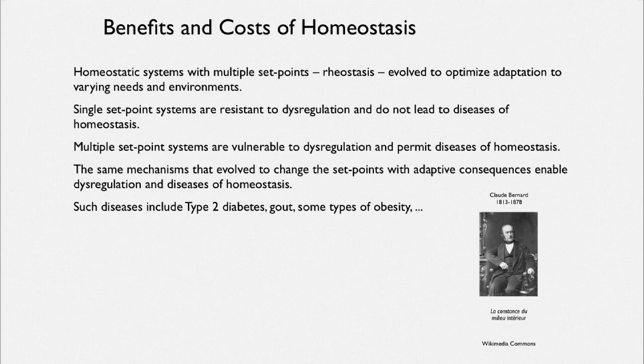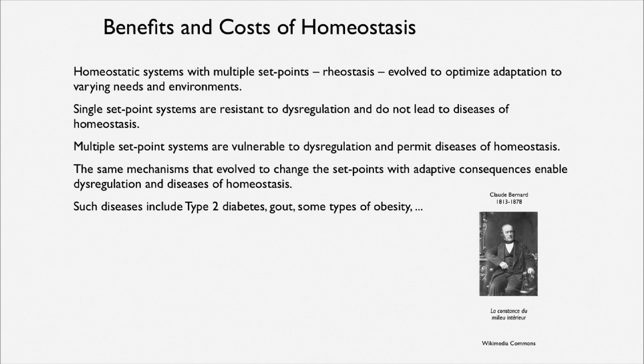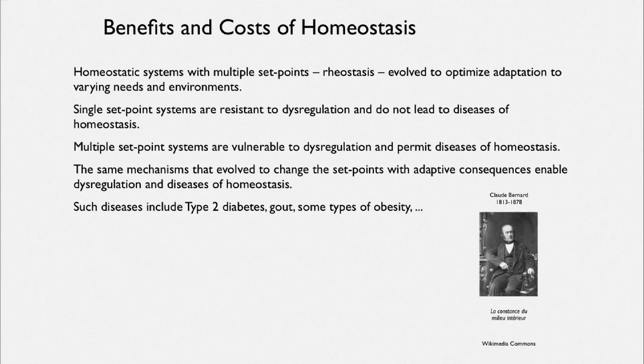The central thing going on here is homeostasis and how it's regulated. The man who gave us insight into its importance was Claude Bernard, a great French physiologist, who discussed the importance of what he called the constancy of the internal environment — la constance du milieu intérieur. It was one of the major advances in medical science in the 19th century. It is a 20th century insight that the dysregulation of homeostasis leads to some of our most severe chronic diseases like diabetes, gout, and obesity.